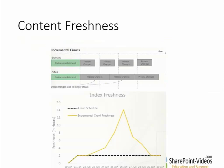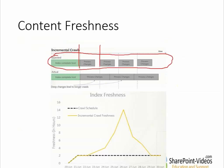As you can see on this picture, this is how incremental crawls are expected to behave. If I schedule the incremental crawl to run every two hours, the first one starts here, the second one starts here, the third one here — at zero, two hours, four hours, six hours, and so on. My expectation is that the incremental crawl should finish before the next one gets started.